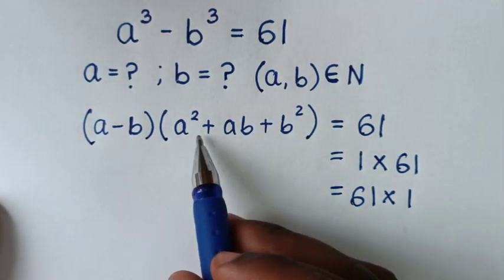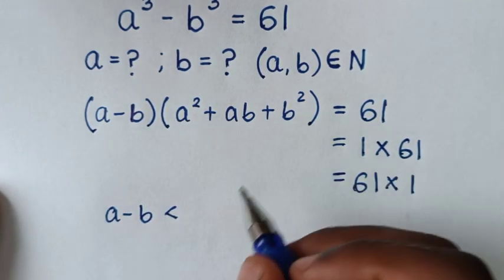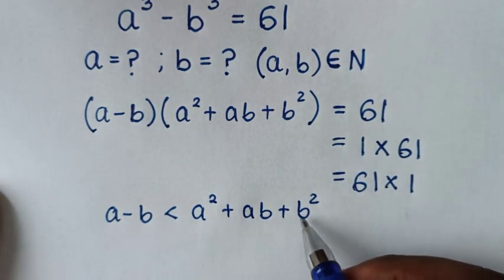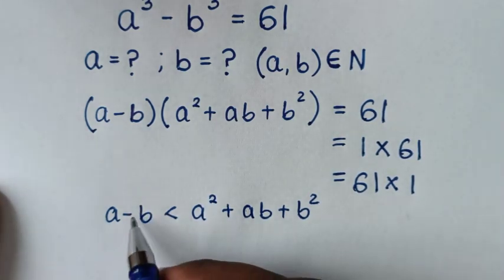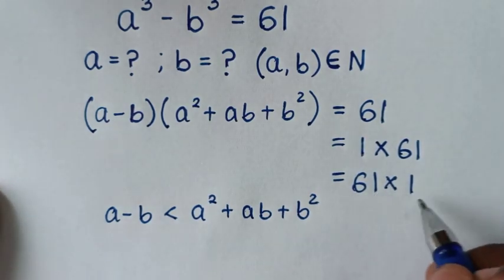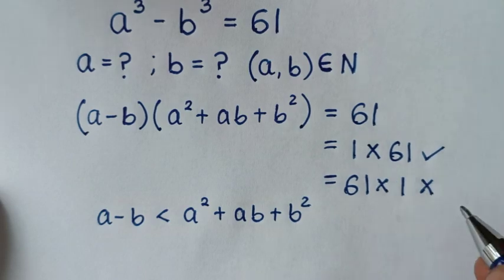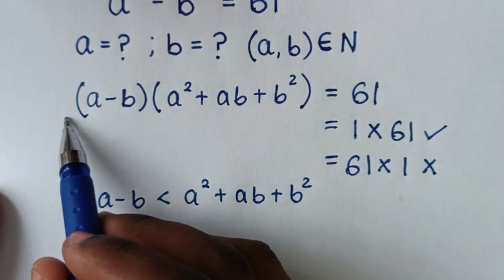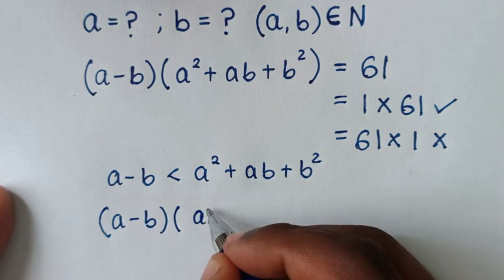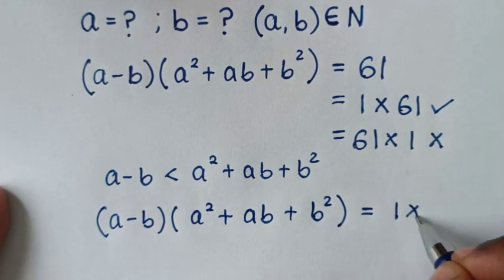Then, from the relation between the two factors, (a - b) is less than (a² + ab + b²), because here we have subtraction versus addition of squares. So when we compare with 1 times 61, 1 is less than 61, which fits. But 61 times 1 would make the larger factor come first, which is not possible. So it will be (a - b)(a² + ab + b²) equal to 1 times 61.